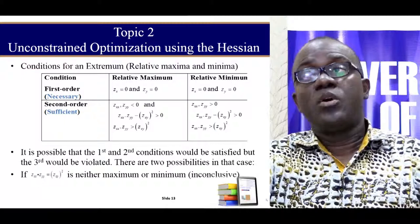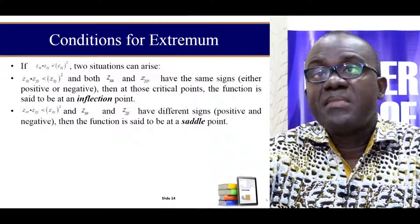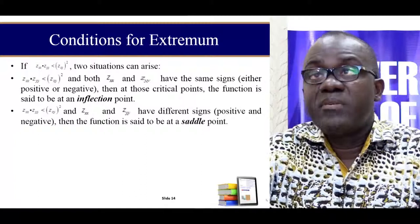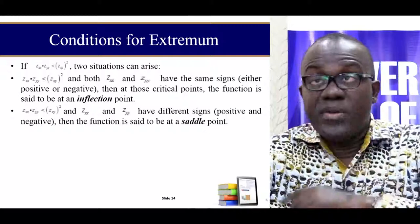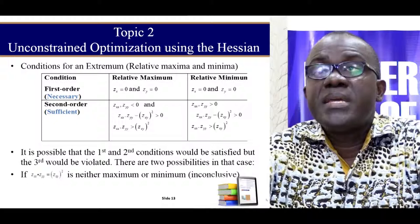The differentials — the first order differential — should be equal to zero. The second order, when you have these conditions satisfied, then you have more or less a relative maxima or a relative minima. There are some other conditions which are also investigated, like point of inflection and saddle points. For economists, saddle points and points of inflection are not very interesting to us. Our main discussion will focus on maximum and minimum.